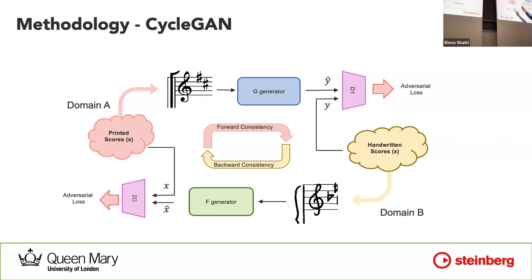The whole idea is to go from one domain to the other and back again — that is why we have two consistency losses. In this case, let's consider printed scores to be domain A, and domain B is going to include handwritten scores. From the distribution of data from domain A, we're generating an image that has to be similar to domain B, and that is why the adversarial loss looks at the difference between the generated image and domain A.